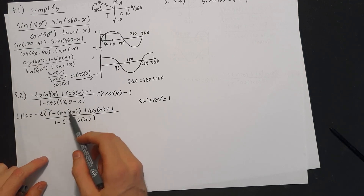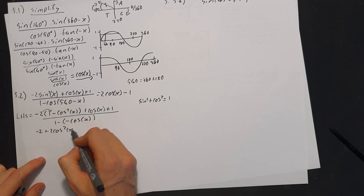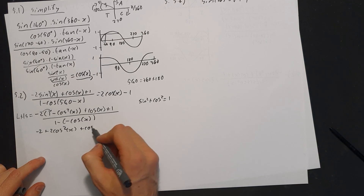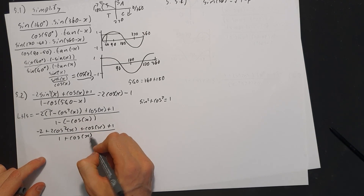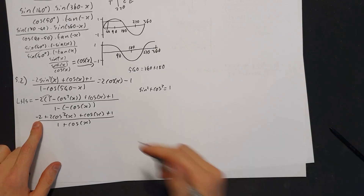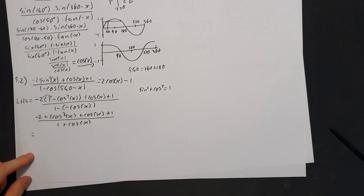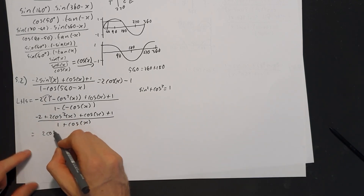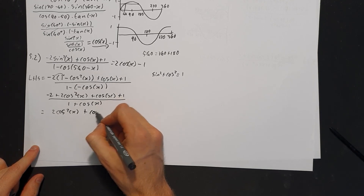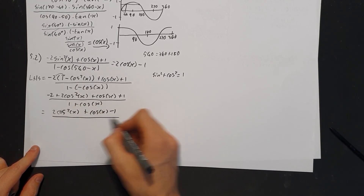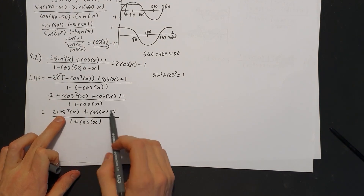Distributing the negative 2 gives negative 2 plus 2 cos squared x plus cos x plus 1, all over 1 plus cos x. Combining the constants: negative 2 plus 1 gives negative 1, so the numerator becomes 2 cos squared x plus cos x minus 1, over 1 plus cos x. This numerator is a factorable quadratic.